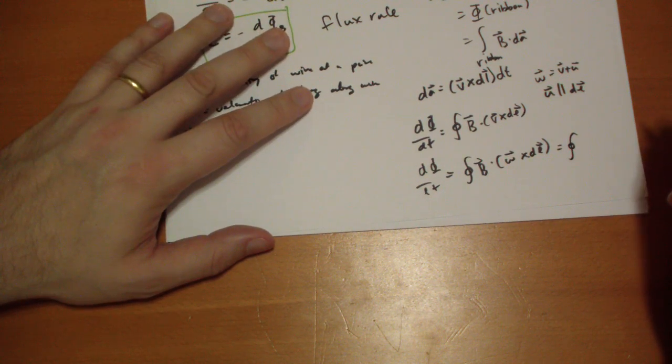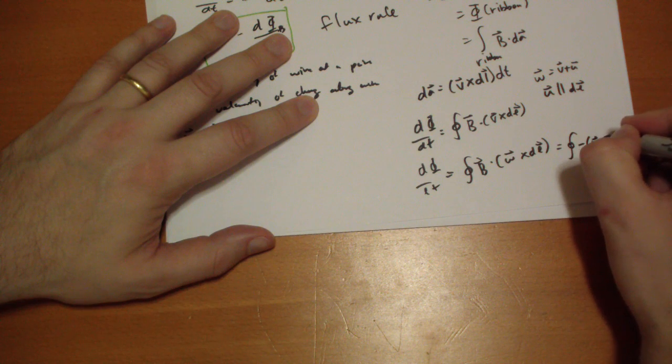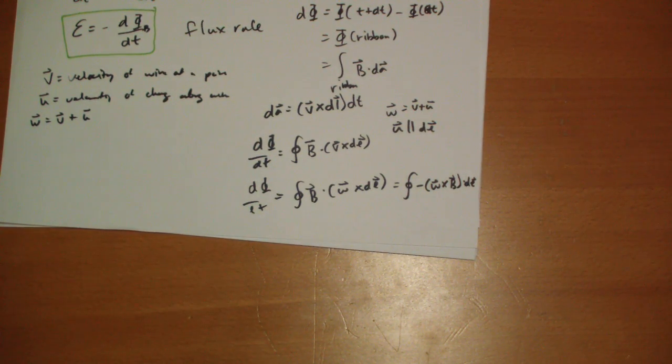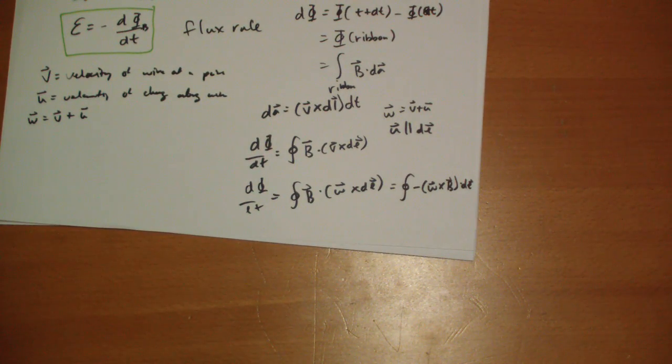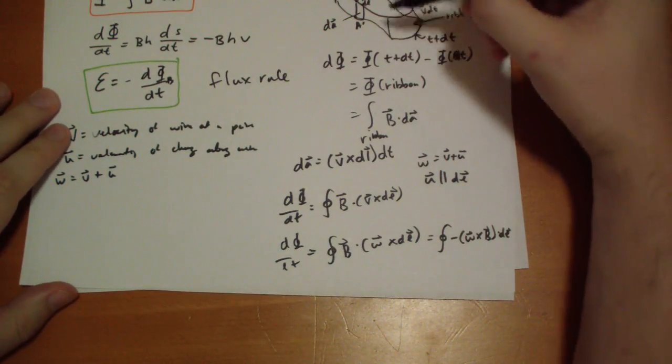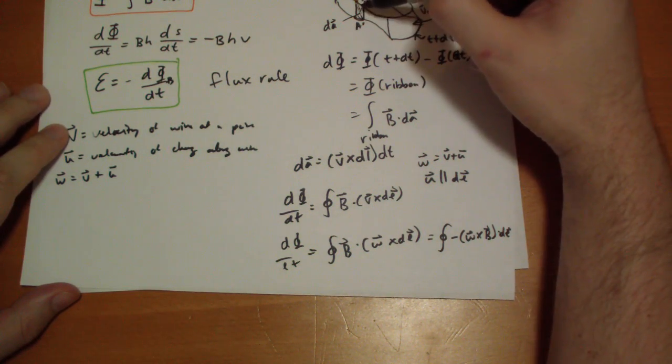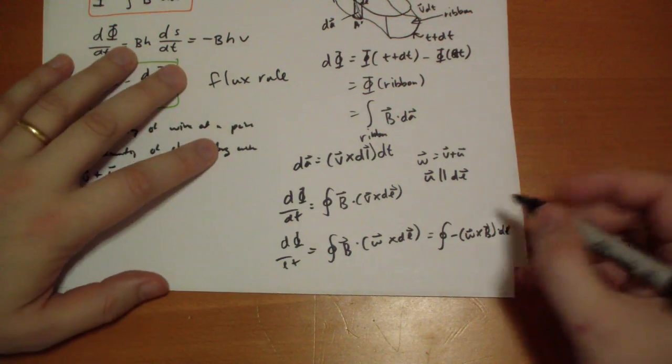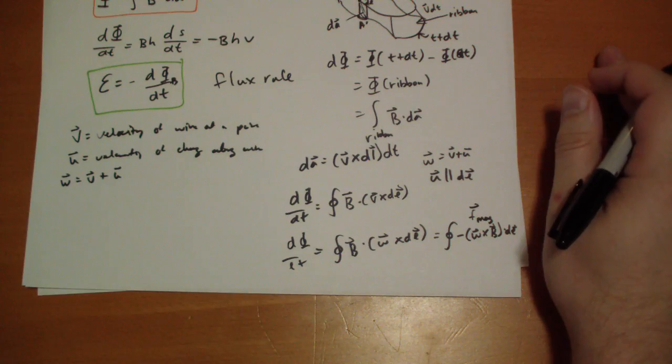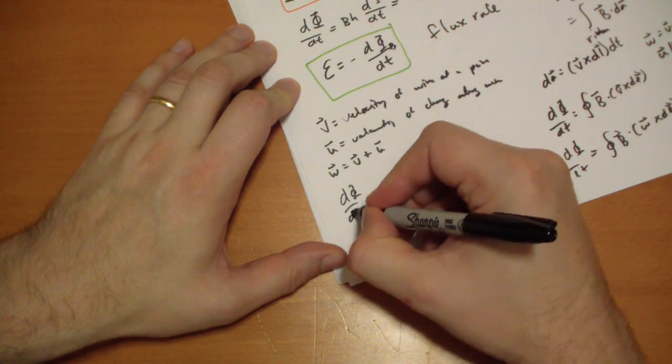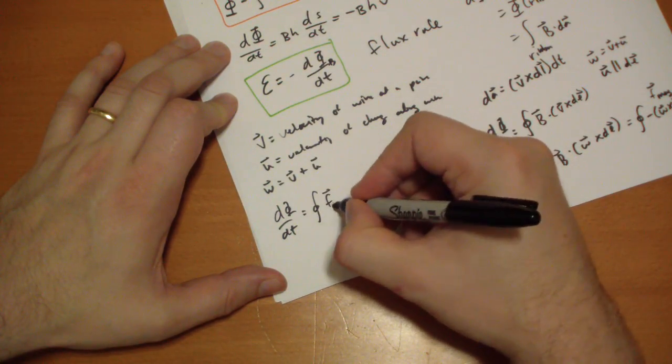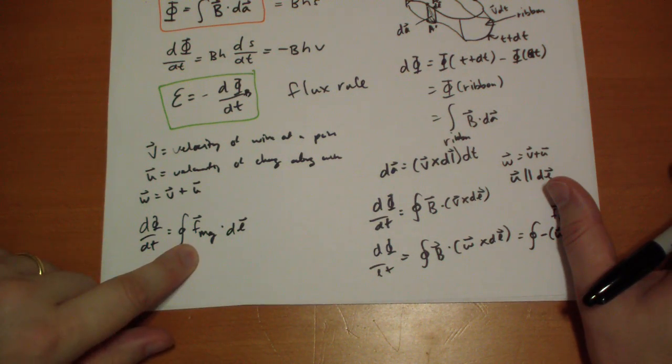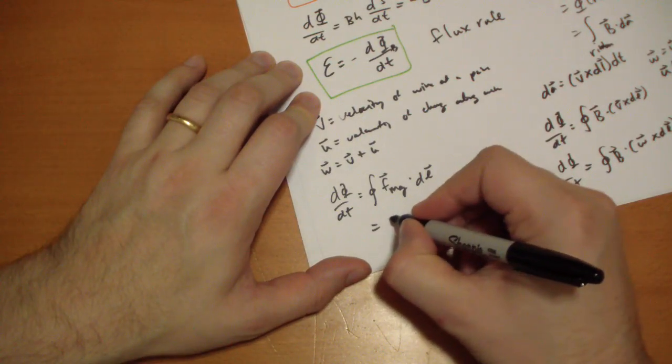So we're going to put negative W vector cross B dot DL vector. That's triple product right there. That's D phi by DT. So what is this W cross B thing? Well, W was the total velocity. It's how the charge moves, both along the wire and as the wire is moving. That is the magnetic force per unit charge F magnet. That's the actual magnetic force. So we can rewrite this as D phi by DT is equal to the F magnetic dot DL vector. And this is just the EMF.